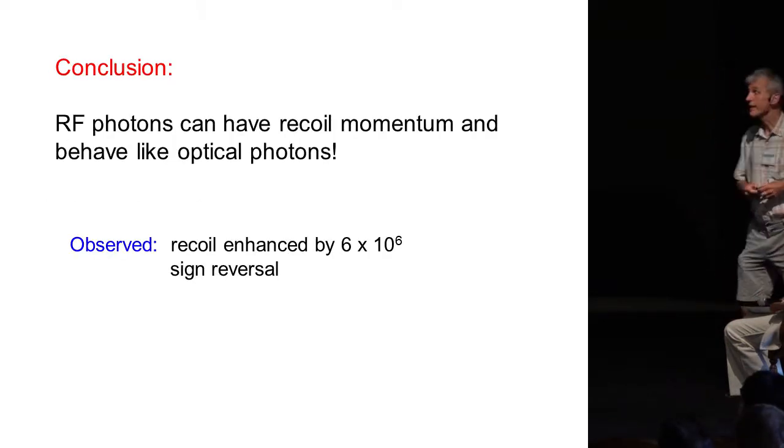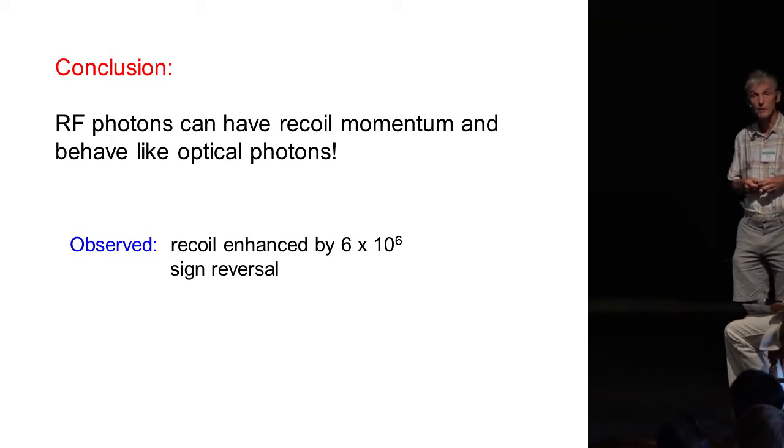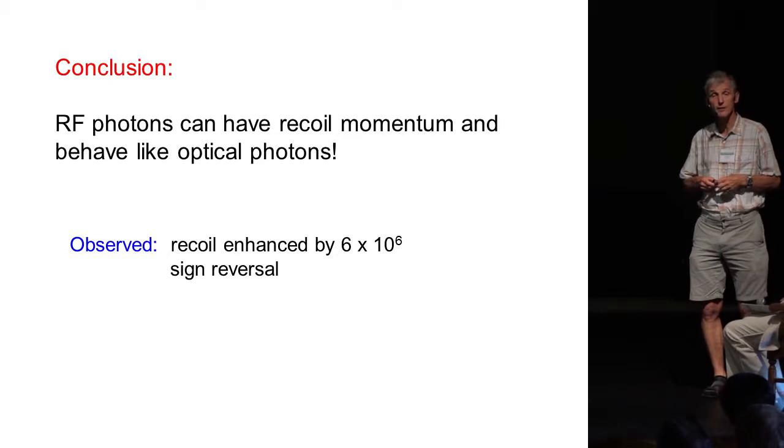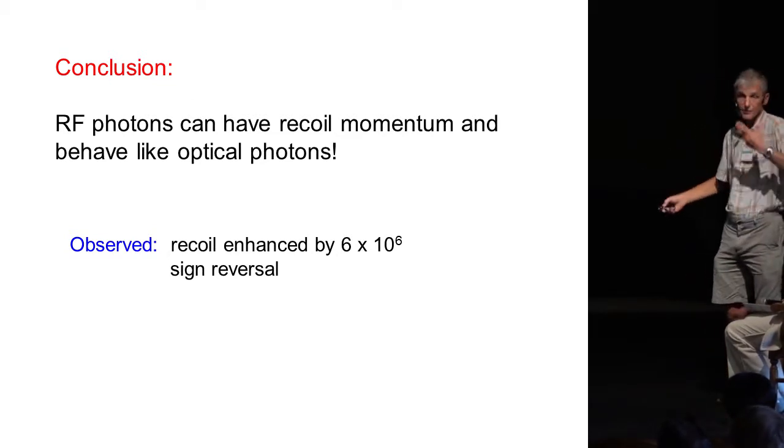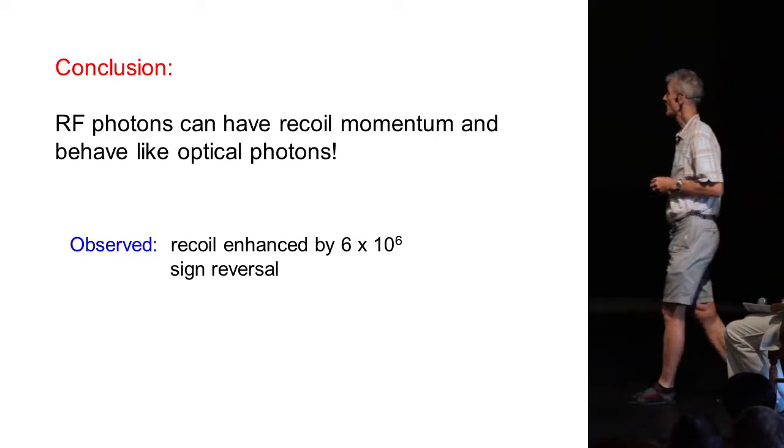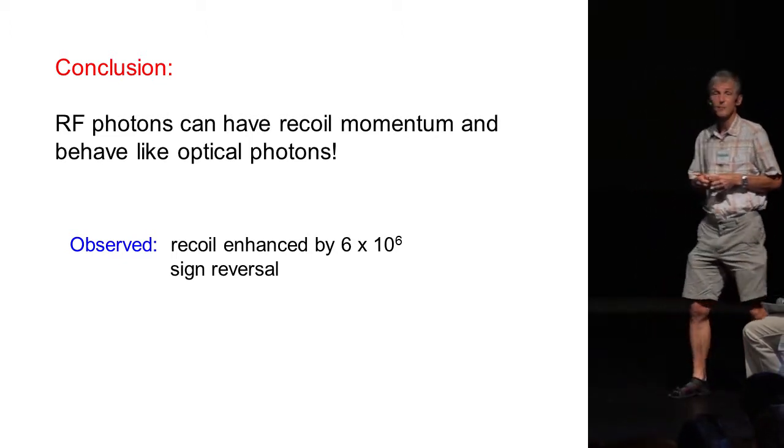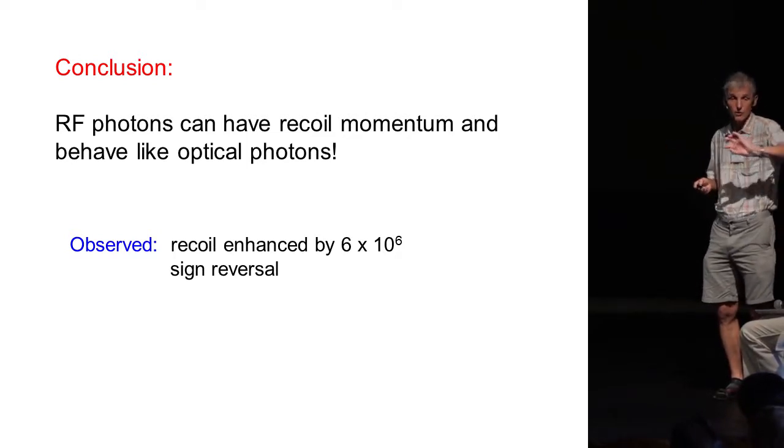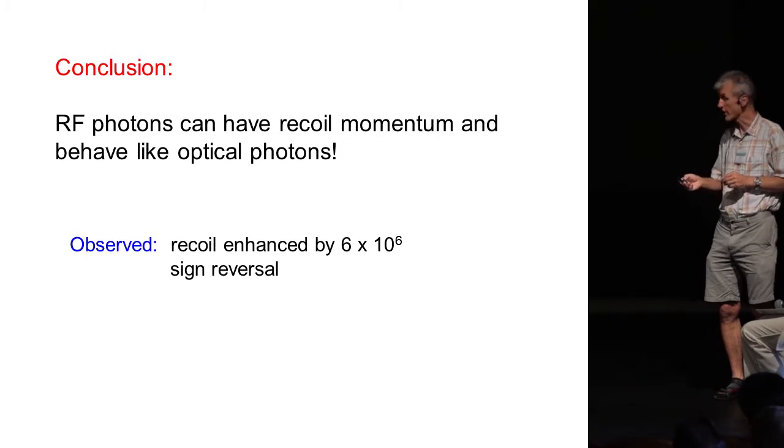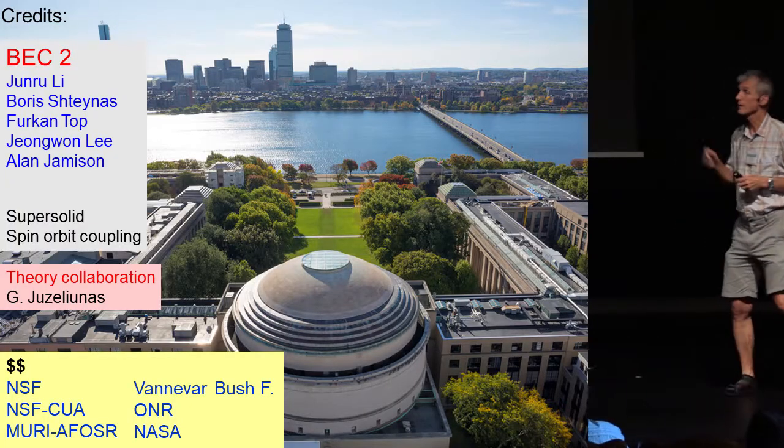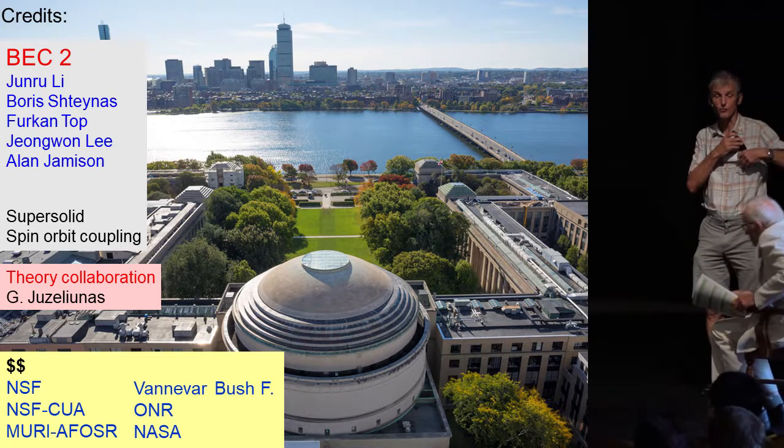The conclusion is radio frequency photons can have recoil momentum and can behave like optical photons thanks to Floquet engineering. And what we observed is that using magnetic forces, we have enhanced the recoil of an RF photon by a factor of six million, and we could flip the sign of the recoil by changing the phase. So let me conclude by thanking my collaborators and the funding agencies.